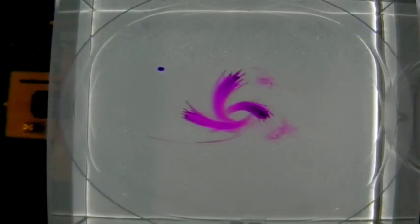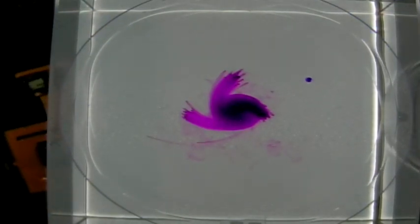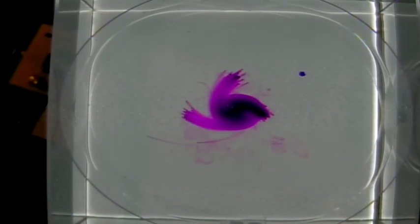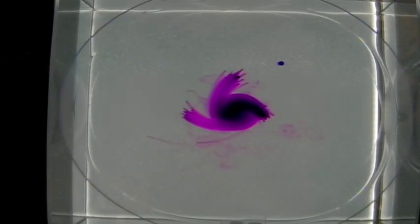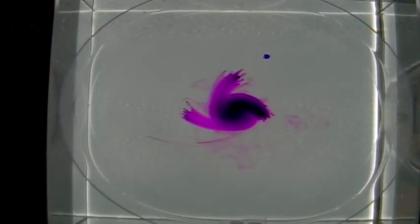This is because the flow in that Ekman layer is influenced by friction such that it reduces the speed of the flow, which reduces the strength of the Coriolis force. Then the Coriolis is not able to fully balance the pressure gradient force, and the flow flows down the pressure gradient towards the low pressure at the center.